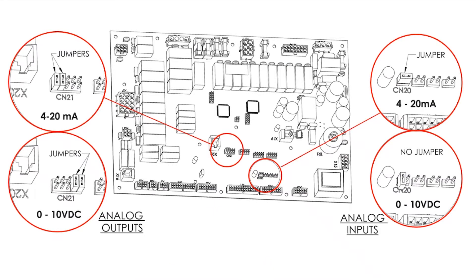Next we'll talk about external controls. Before we talk about the navigation, there are pins and jumpers that have to be in the correct position on the circuit board. This slide came from our manual. For example, on pin number CN21, if you're choosing a 4-20 milliamp analog output, you want your jumpers on pins one and two. If you want zero to ten output, your jumpers go on pins four and five. On the inputs, pin number CN20 — if you chose 4-20 that's the jumper position, or if you chose zero to ten volt DC, this is the jumper position in vertical position.